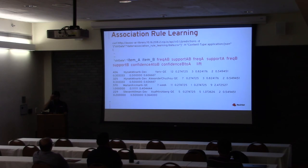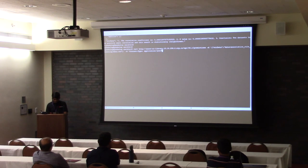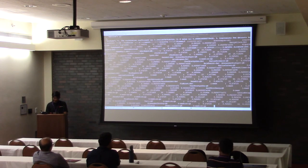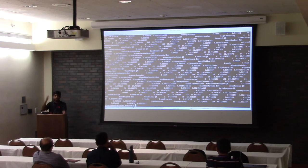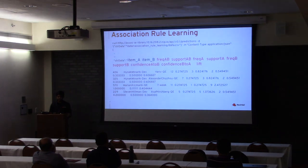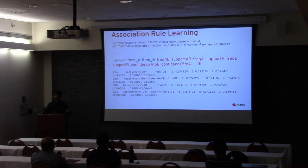When you run association rule learning you get a bunch of columns of data. Once you export this to a spreadsheet and look at the different columns you can start asking questions. The metrics include confidence, support, and lift — basically the chances of one event happening with another, how frequent they are, and so on.